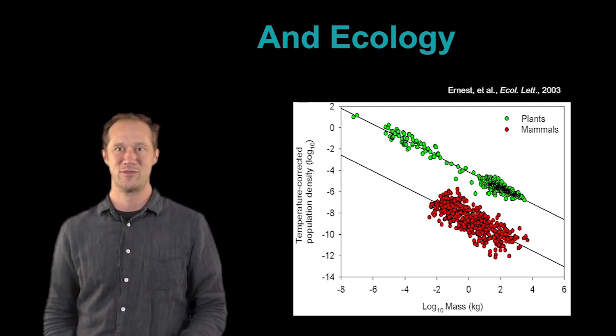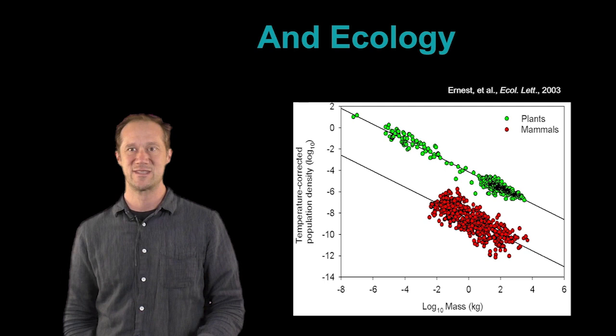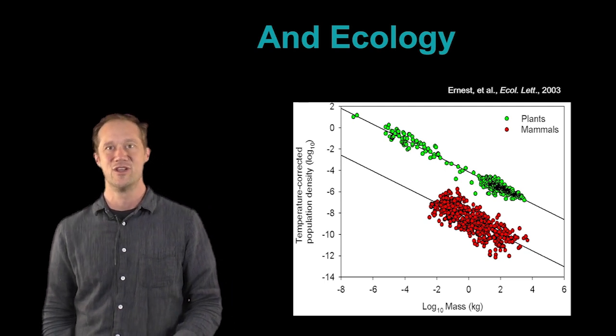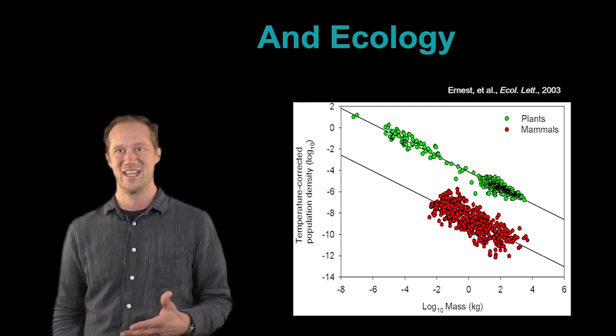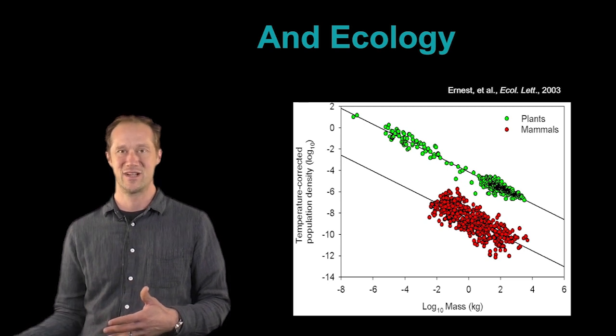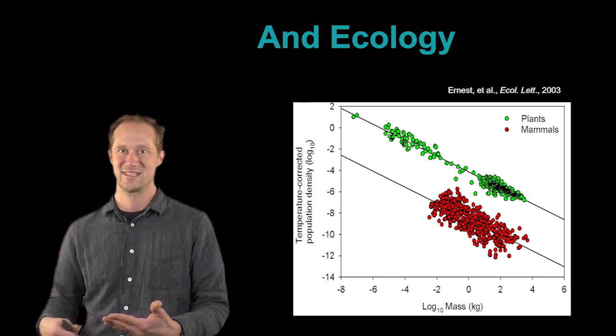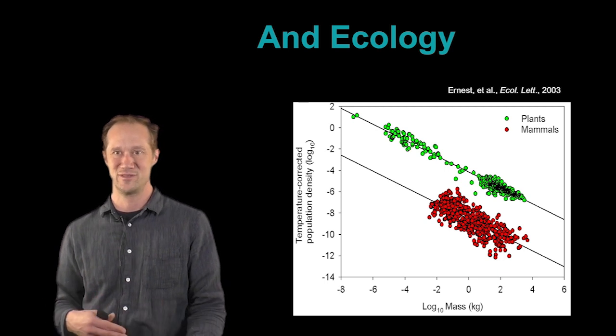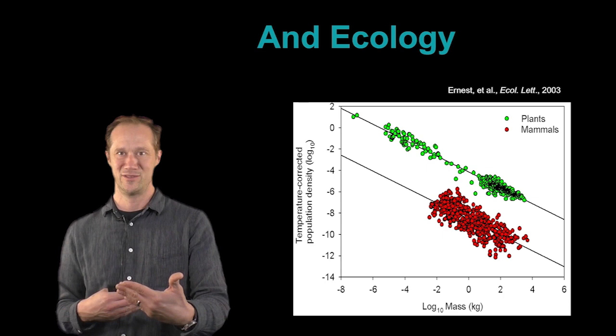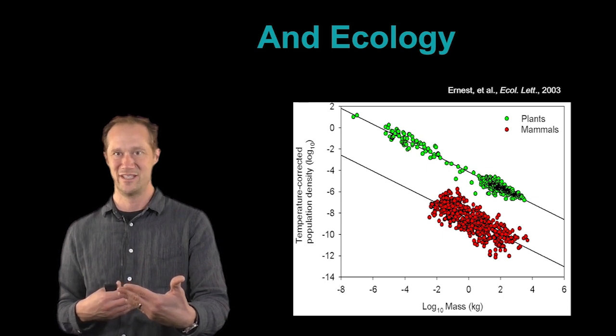And one interesting thing here is that animals are much lower than the plants, and that's because of this conversion efficiency, where plants have to convert sunlight into energy, and basically all animals, either directly or indirectly, get their energy from plants. So they get about 10% of the energy from plants that they can use to produce their numbers. So they're lower down because they lose a lot of efficiency in going from plants to animals.